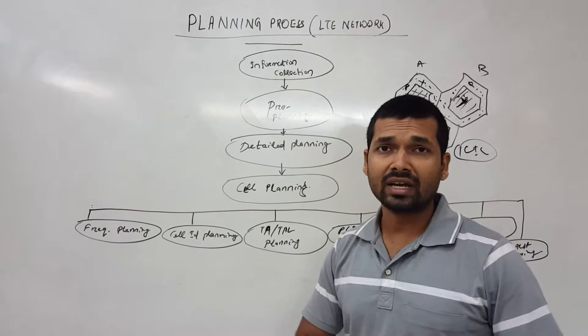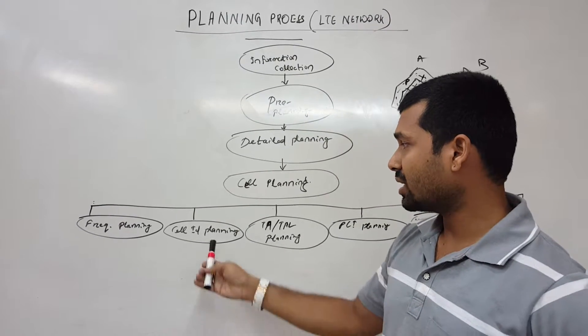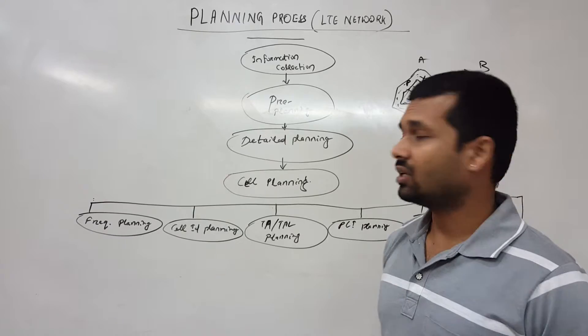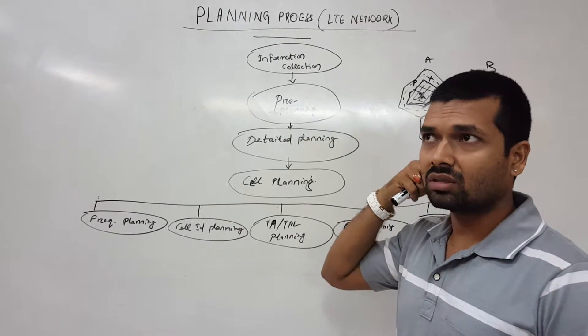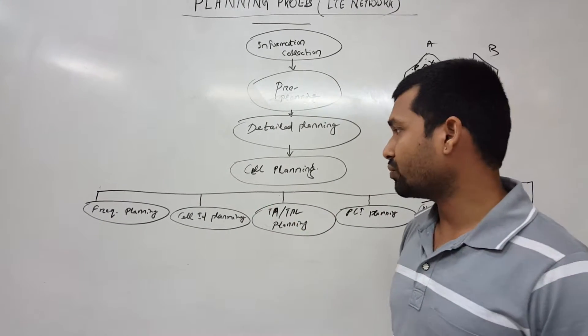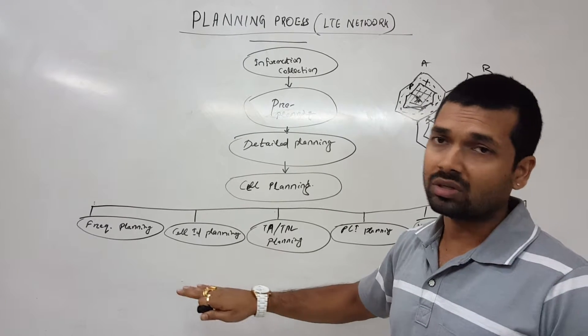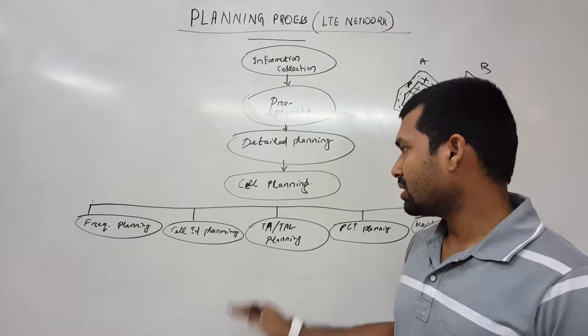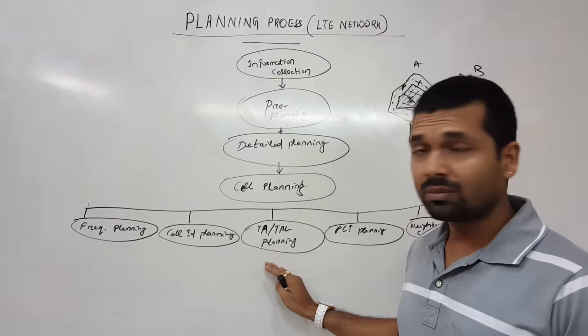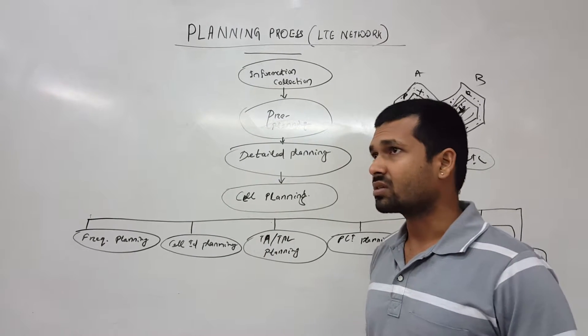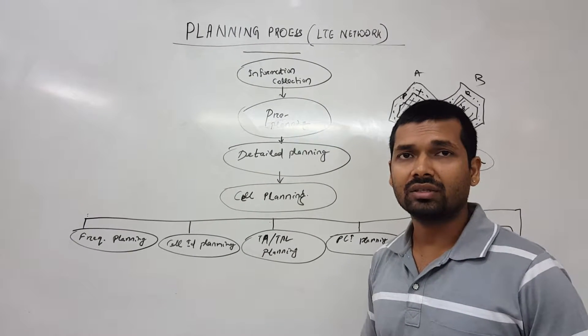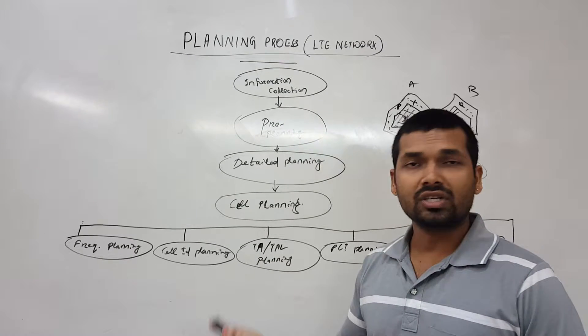So this is ICIC feature. This things also we need to plan. That is a little description about the frequency planning. Moving forward, cell ID planning: we need to plan the cell ID because cell ID is not the 3G cell ID normally we use. We need to plan the cell ID for LTE network.